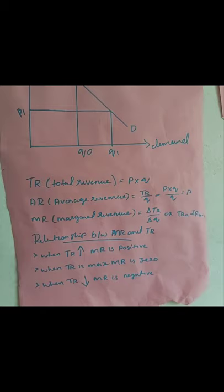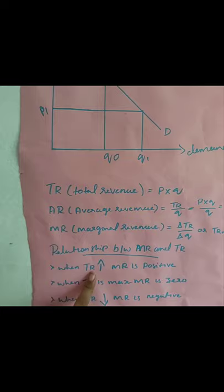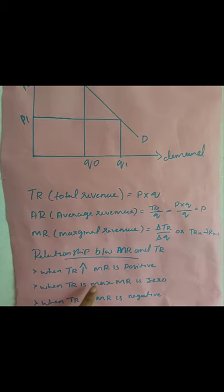The relationship between TR and MR: when TR rises, MR is positive. When TR is at its maximum, MR is zero. When TR falls, MR is negative.